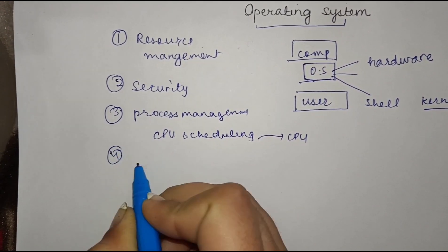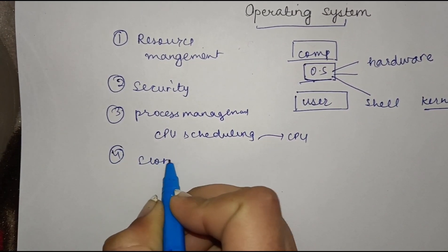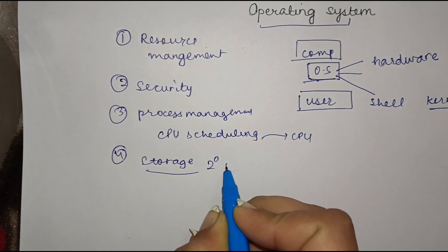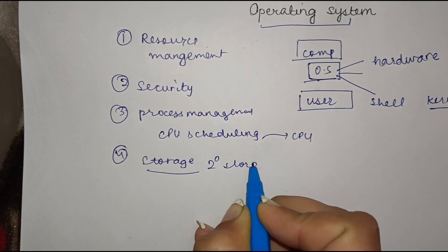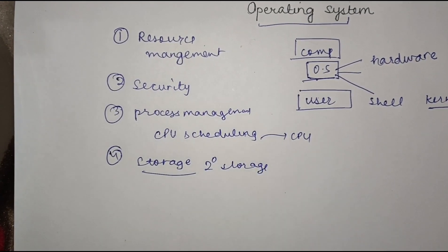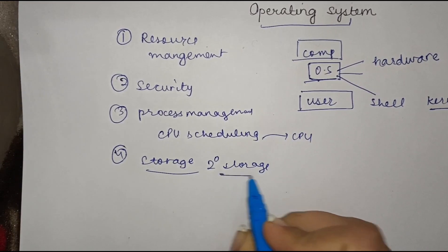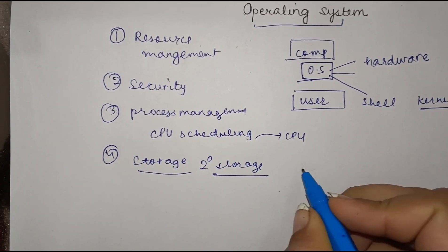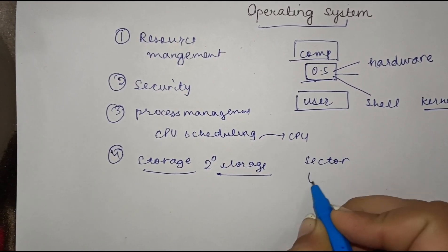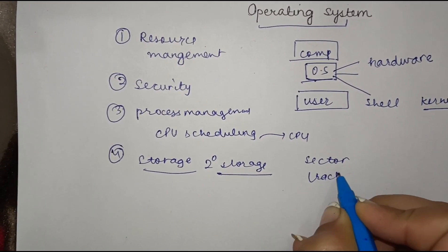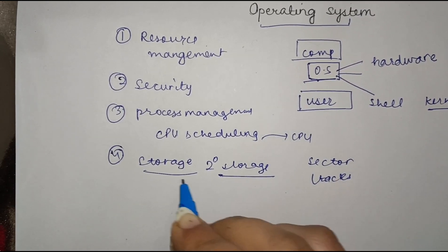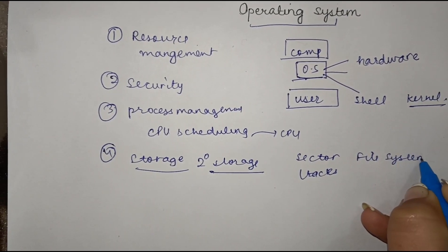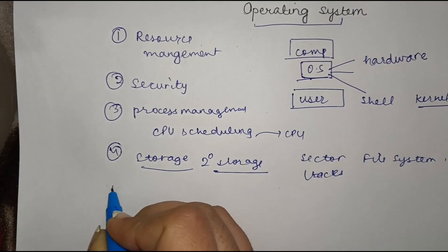The fourth function is storage management. This covers secondary storage devices such as the hard disk. It focuses on how data is stored on the hard disk in the form of sectors and tracks, and it refers to the file system — that is, the storage system.